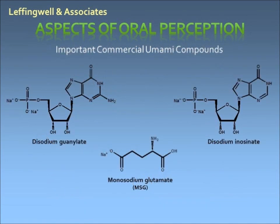Monosodium glutamate was the first commercial umami compound discovered, and it's been used in foodstuffs since 1909. In 2010, worldwide production was estimated to be about 2 million tons per year. The ribonucleotides disodium guanylate and disodium inosinate are also extensively used in the food industry, but to a much lesser degree. Although these have been historically used for the umami taste, efforts to reduce or eliminate monosodium glutamate has led to the development in the last few years of a number of new proprietary compounds that are just now entering markets.